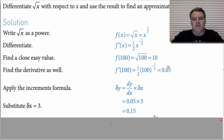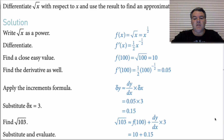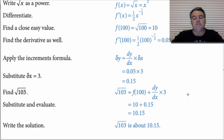So the derivative when x equals 100 is 0.05, and the change in the y value is 0.15. In other words, we've gone from the square root of 100, which is 10, up to 10.15. So our approximation is 10.15, and that actually works out to be pretty close.